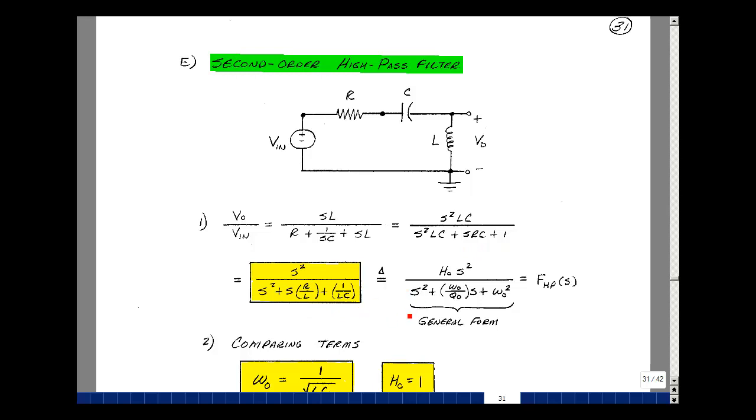This, too, is a form of a general second-order high-pass filter, and I'm going to define it the following way as H naught S squared divided by S squared plus omega naught over Q naught S plus omega naught squared. I'll call this F sub-high-pass of S in general.